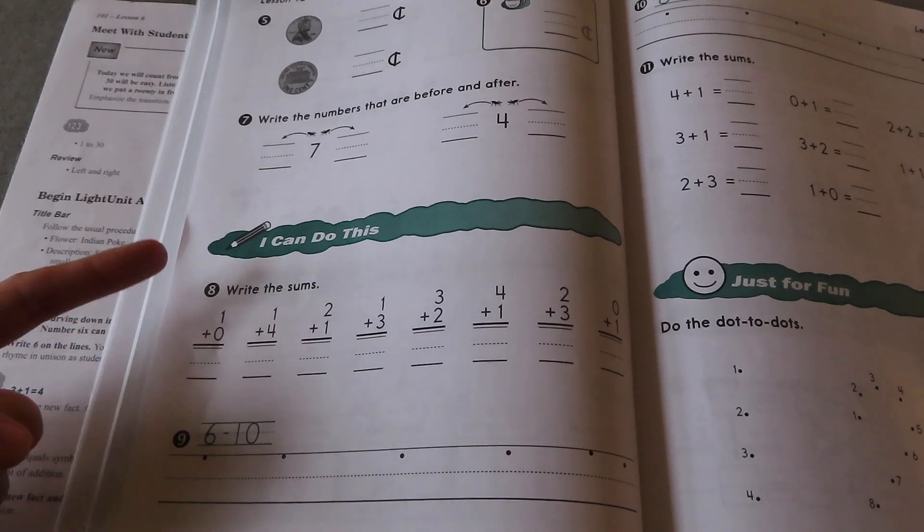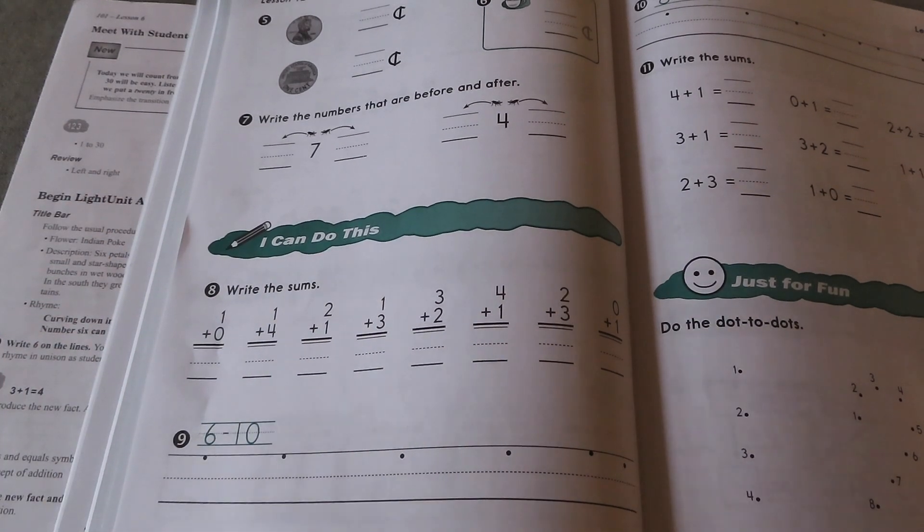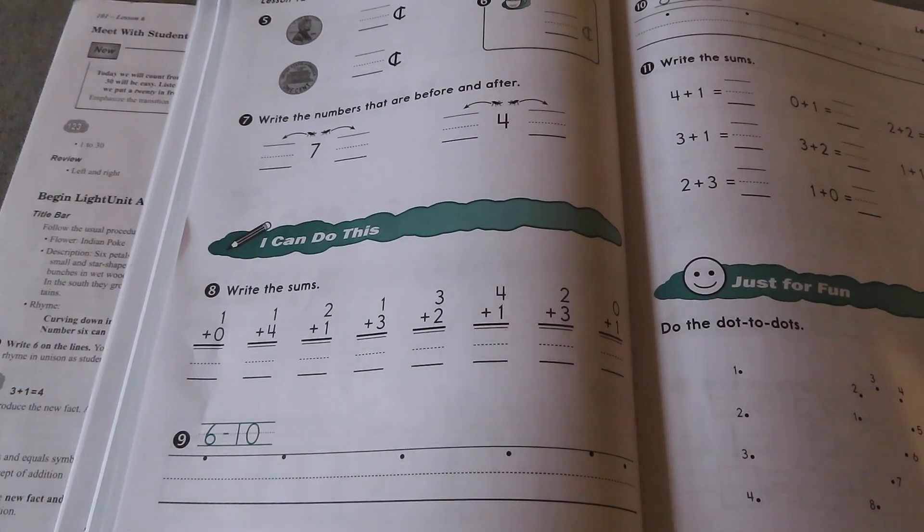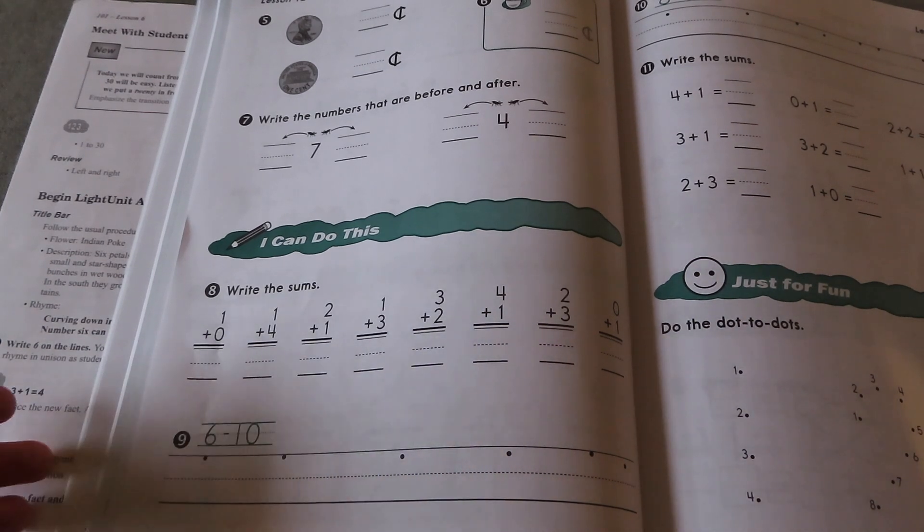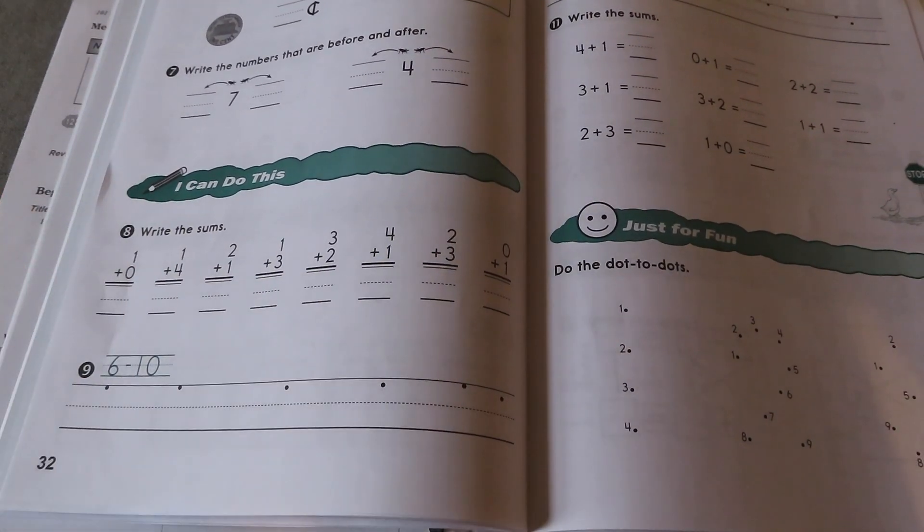You always have an I can do this section. The I can do this section is of course for your child to do independently. Now sometimes there is stuff in this section where you have to orally say something and they have to write it down, but for the most part it is a completely independent section, which is really nice when you are teaching a first grader.